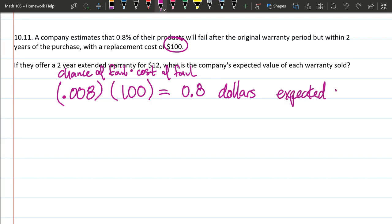Or in this case, the expected cost per unit. So there's a very small chance it fails, $100 is the cost of failure, so you multiply these two together and you get the actual expected value or the expected cost.